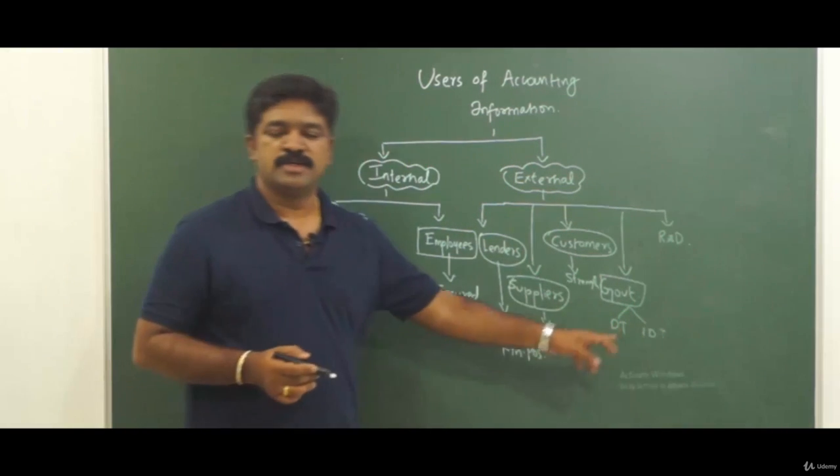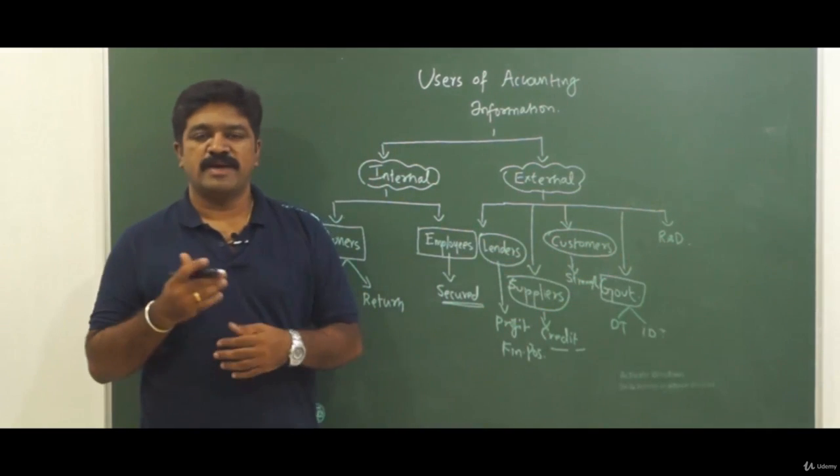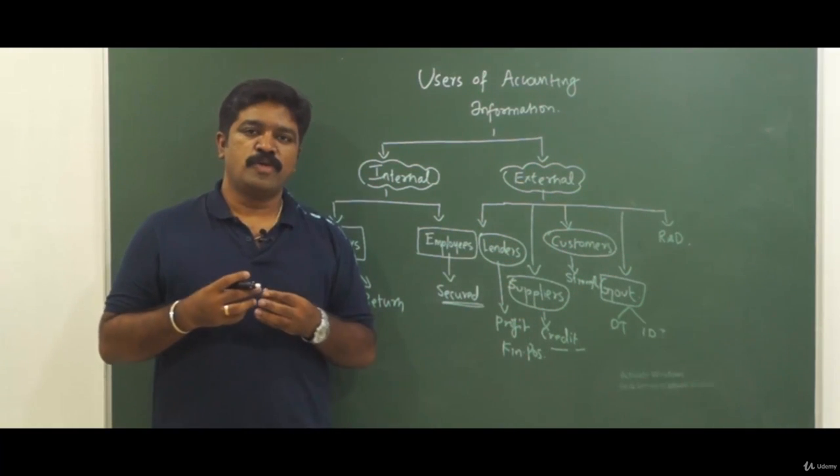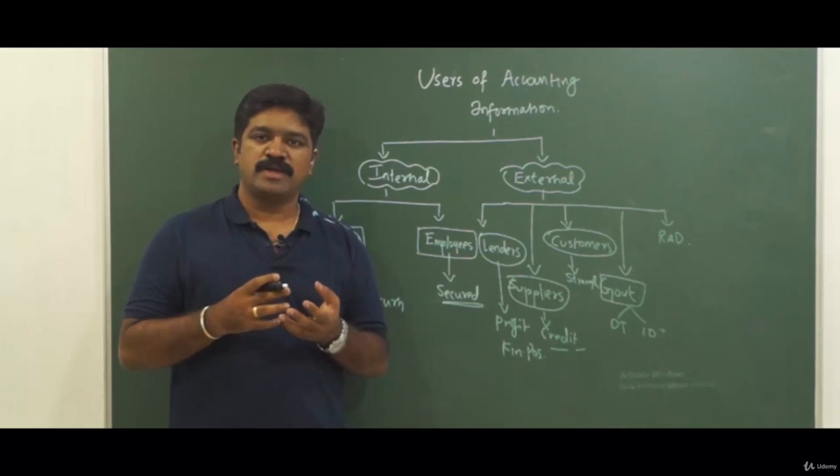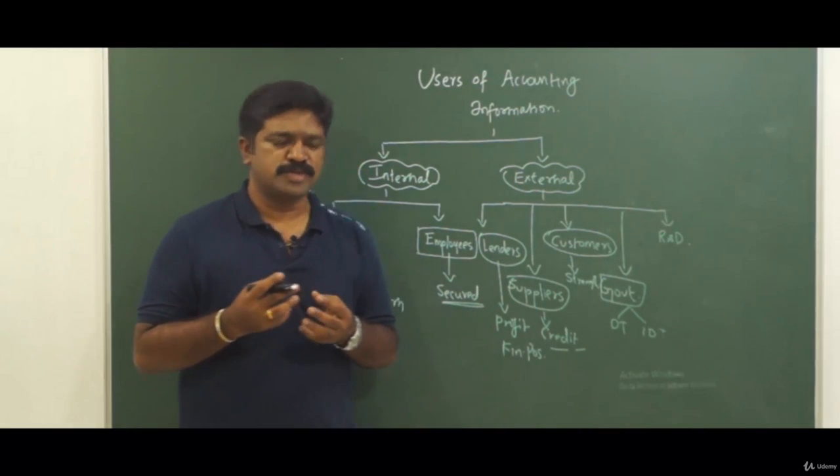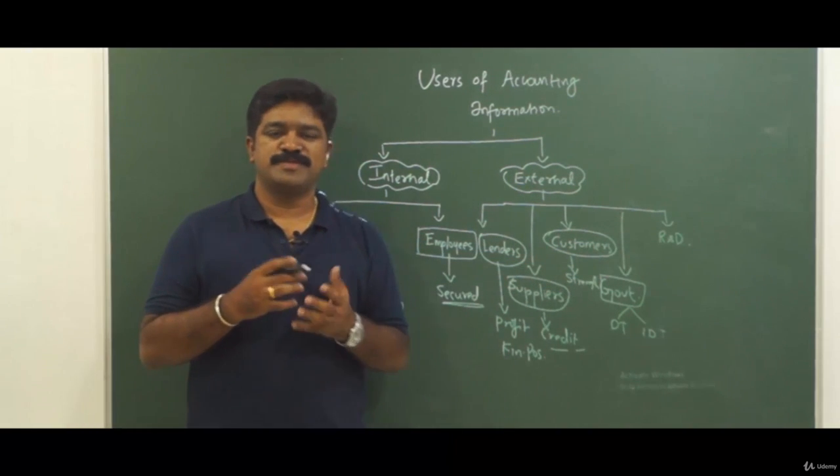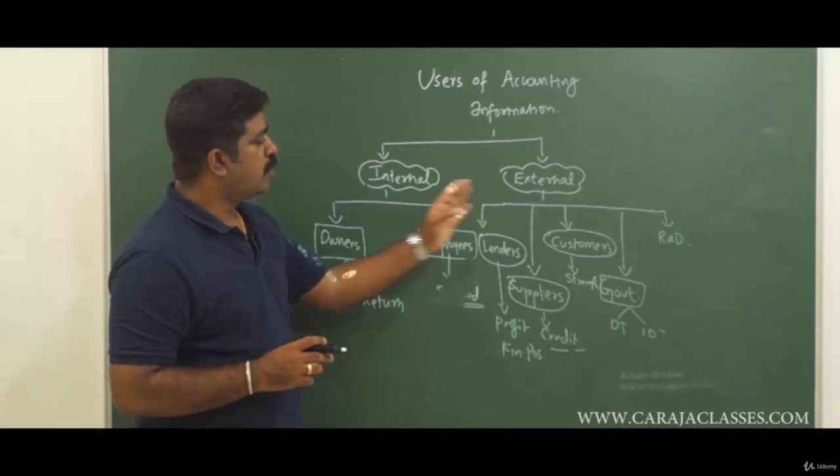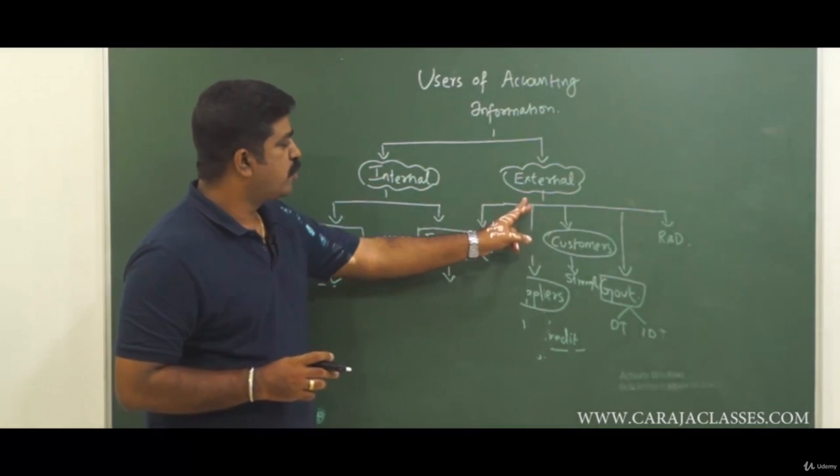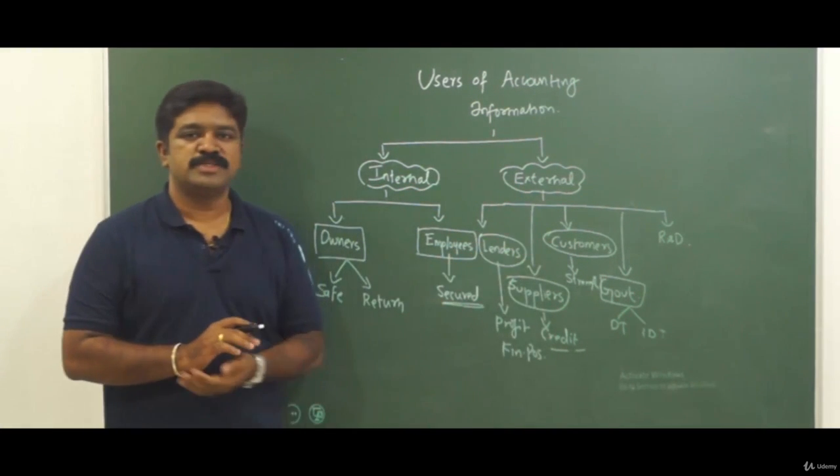And there are various research and development teams, groups who will be carrying out extensive research on various financial matters or financial ratios and all. They'll also be looking for accounting information, financial statements of several business entities. So here we have broadly categorized the users of accounting information into two categories: one is internal, the other one is external.